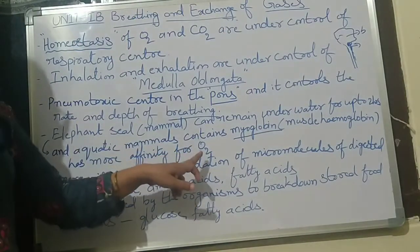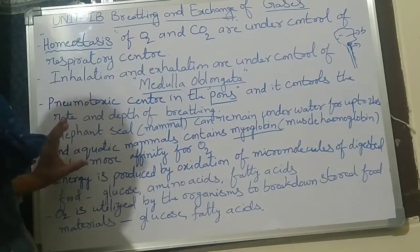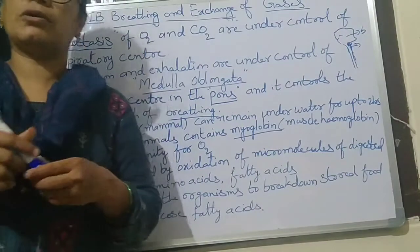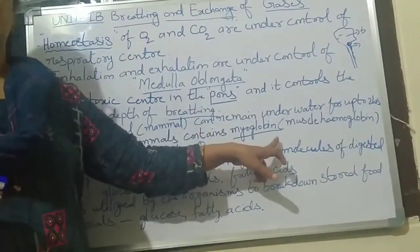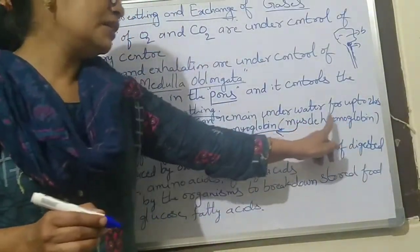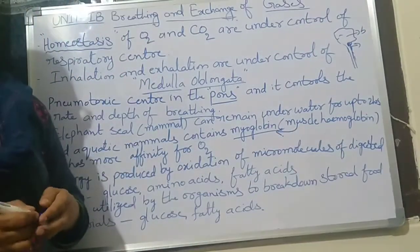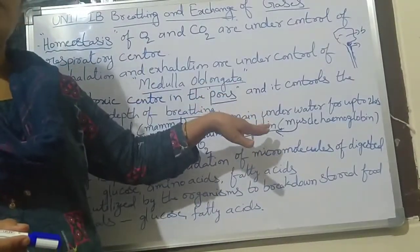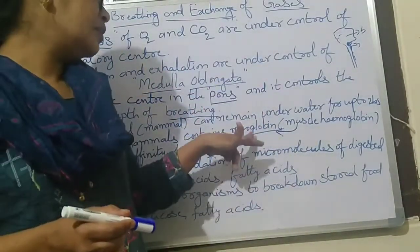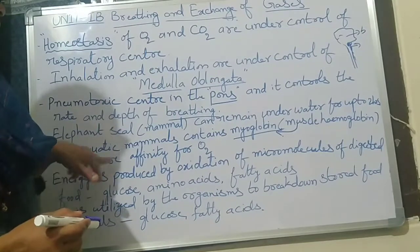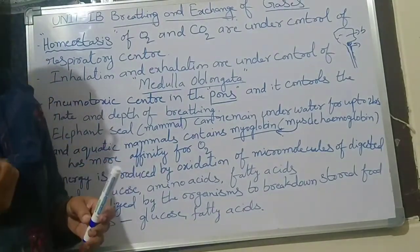Myoglobin, found in muscles, has more affinity for oxygen. We know that RBCs contain hemoglobin — the red pigment — but muscles also contain hemoglobin, which is called myoglobin. RBCs contain hemoglobin; muscles contain myoglobin. Myoglobin has a higher affinity, meaning it can take in more oxygen.